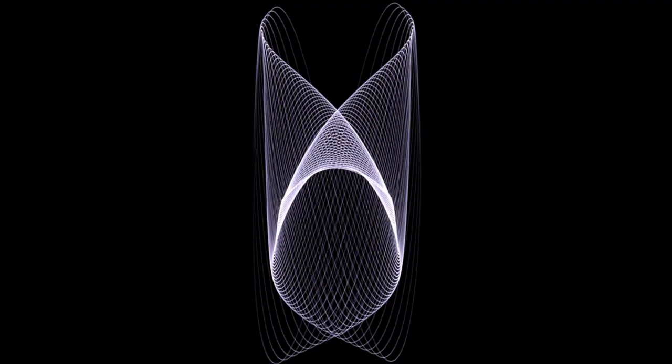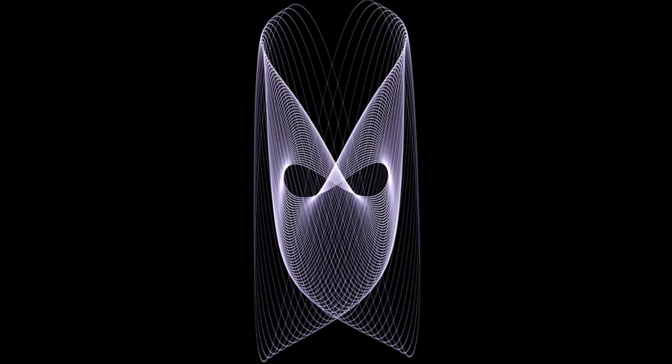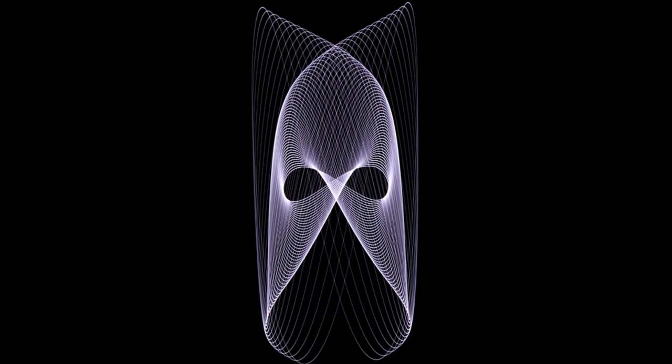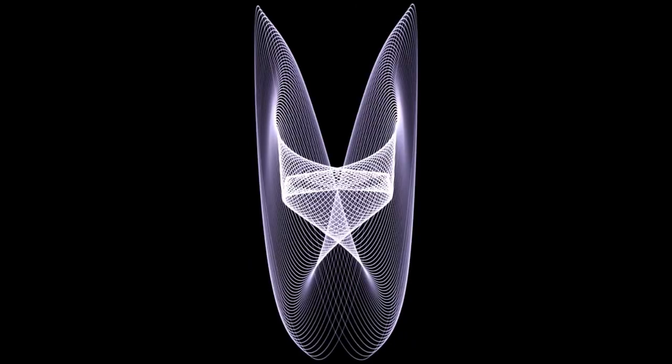I call this one the flower vase. Here we have a mask or, if you flip it upside down, a Viking helmet. The upper wings of this image remind me of the collar of Maleficent's cloak in the recent movie.